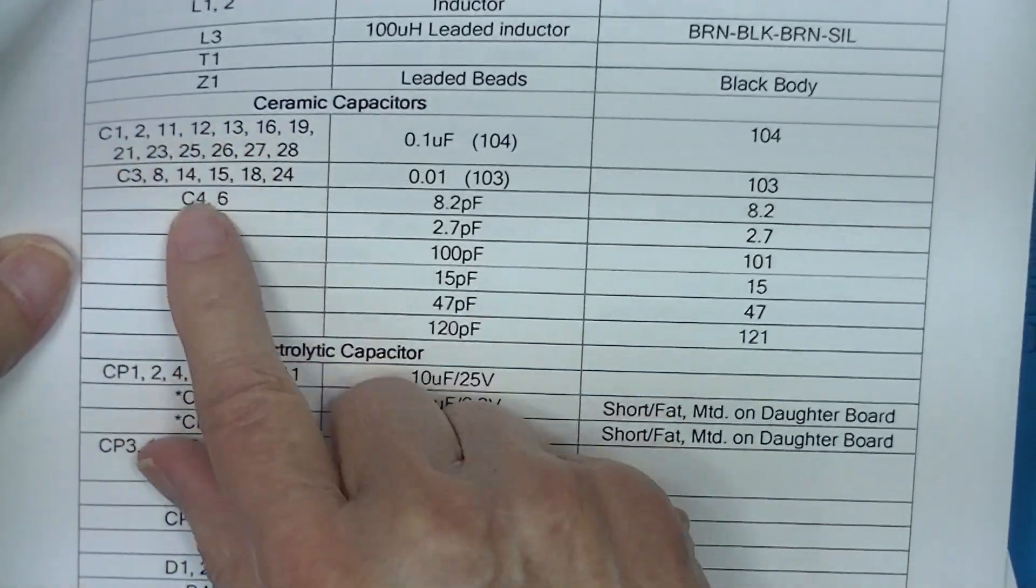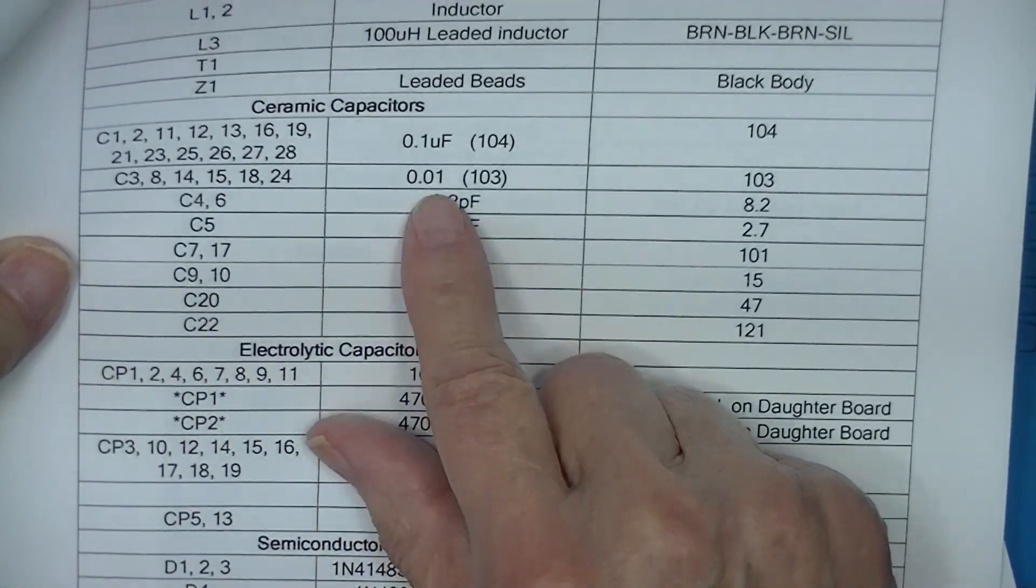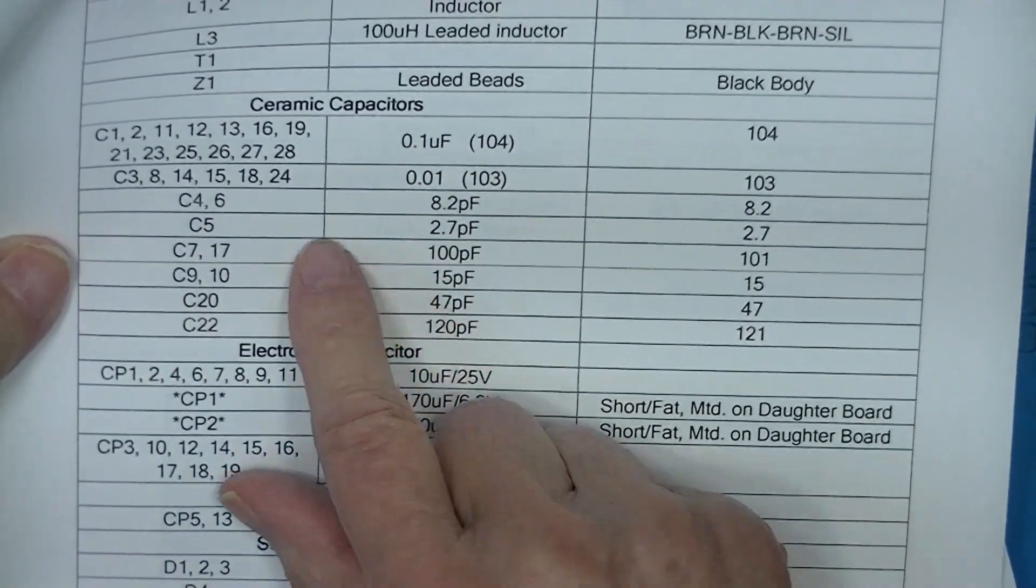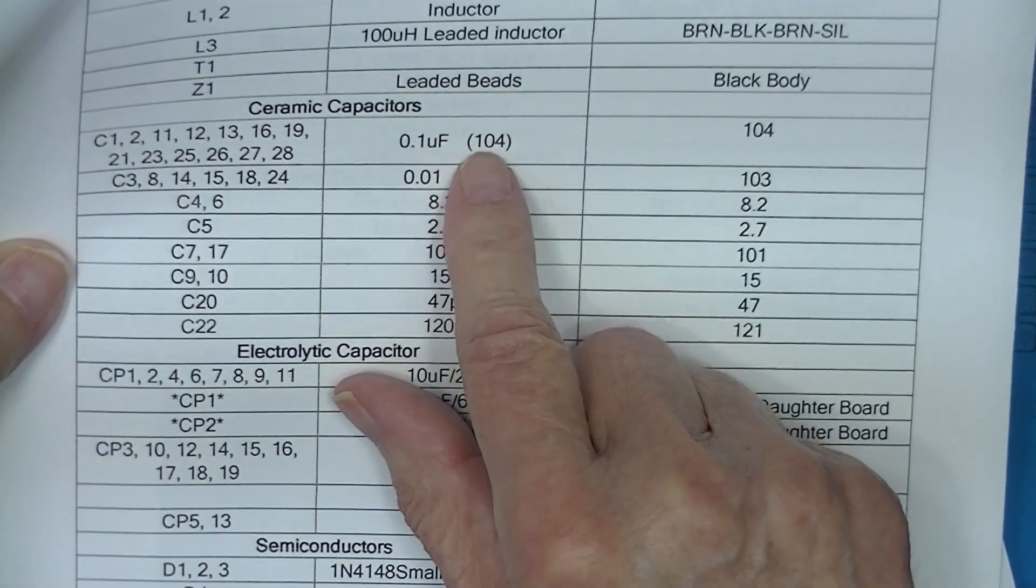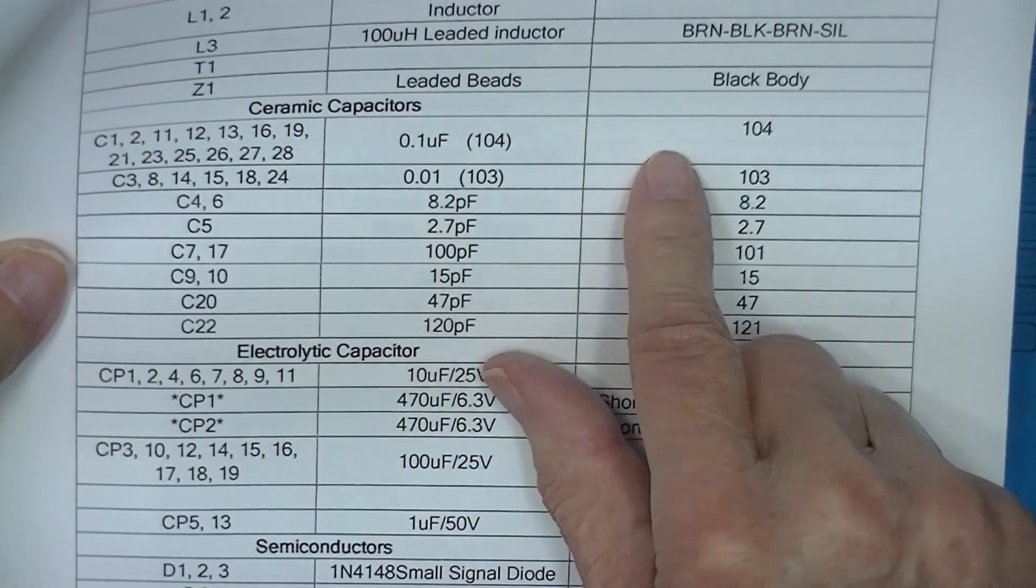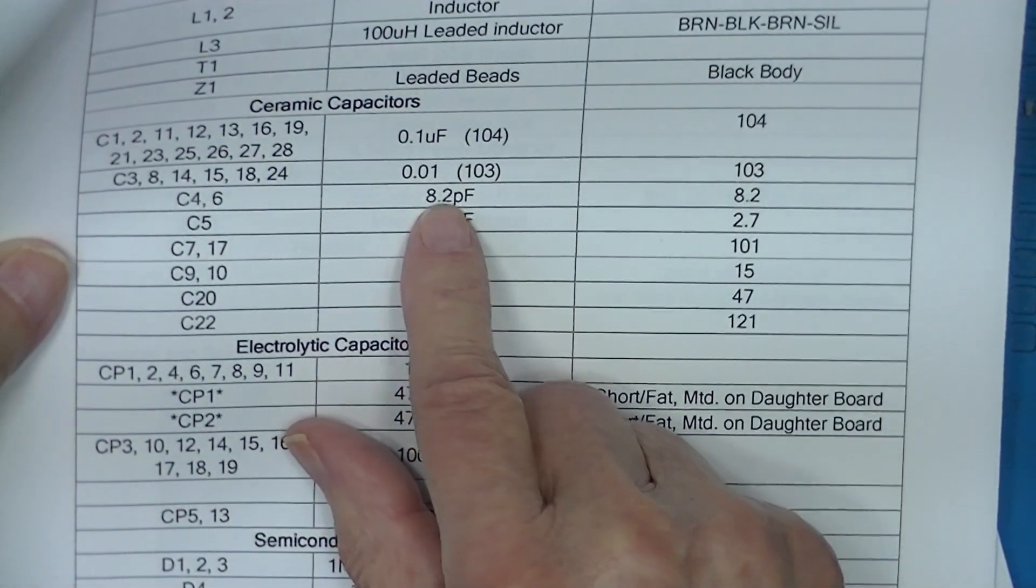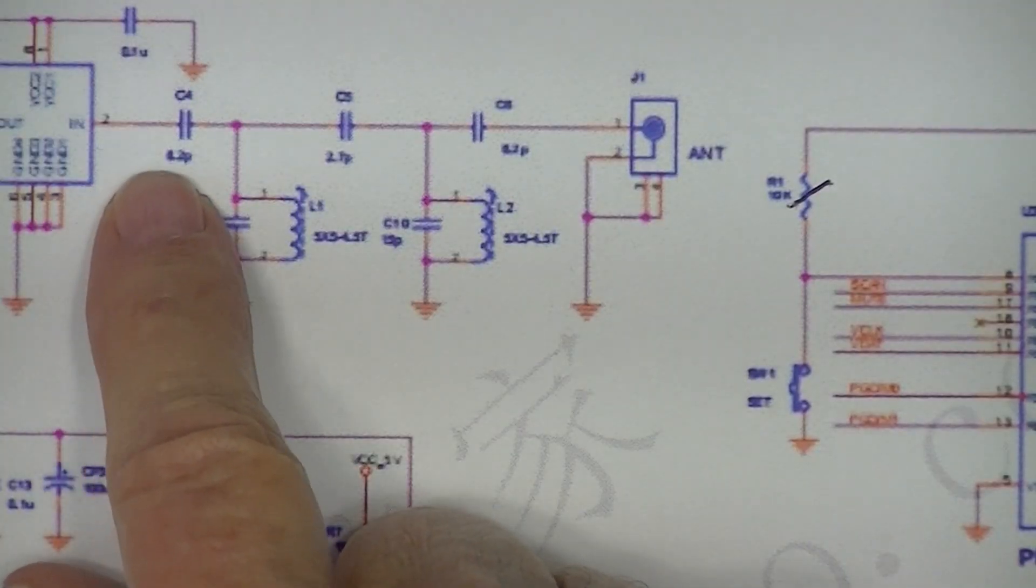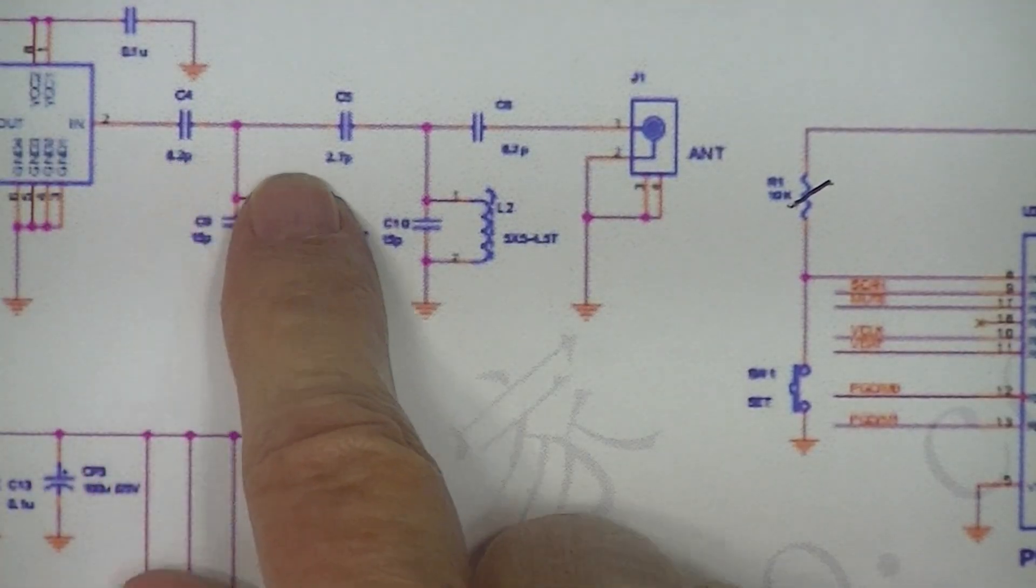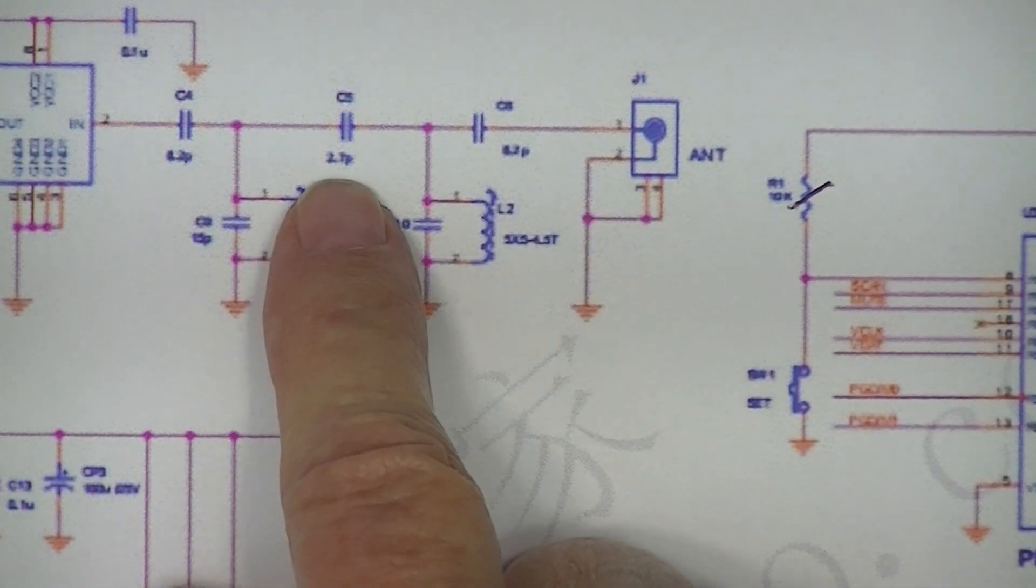I'm going to begin installing the capacitors. There are eight different values of capacitor. By far the majority are these 0.1 microfarad marked 104. I'm guessing that this one could be an important capacitor value-wise. The reason I say that is these two capacitors are 8.2 picofarads and this one is a 2.7 picofarad.